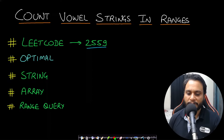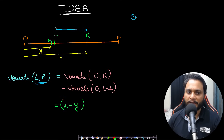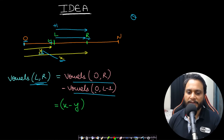The key idea is: if you have n words from 0 to n, and you need the count of valid vowel strings in the range [l, r], instead of iterating linearly for every query, observe that: if the count from 0 to r is x, and the count from 0 to (l-1) is y, then the count from l to r is simply x minus y. This is the classic prefix sum concept.